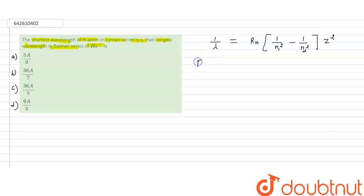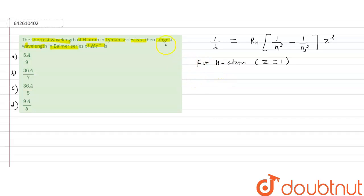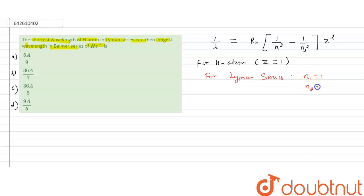For the hydrogen atom, Z equals 1. We are given the shortest wavelength for hydrogen in the Lyman series. For the Lyman series, N1 equals 1. The shortest wavelength occurs when N2 equals infinity. So we substitute all these values into the equation.